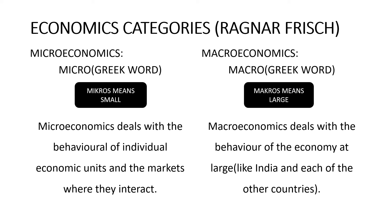Ragnar Frisch has classified economics into two broad categories: microeconomics and macroeconomics. Once again, the terms micro and macro have been derived from the Greek words 'micros' and 'macros', which means small and large. Microeconomics deals with the behavior of individual economic units and the markets where they interact. For example, it studies the decision making by a producer and a consumer and the individual markets for each of the products they produce and buy.